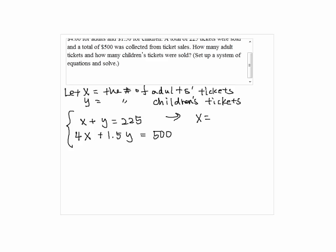By solving the first equation for x, we have x equals 225 minus y. So by plugging in into the second equation, we have 4 times 225 minus y plus 1.5y equals 500.